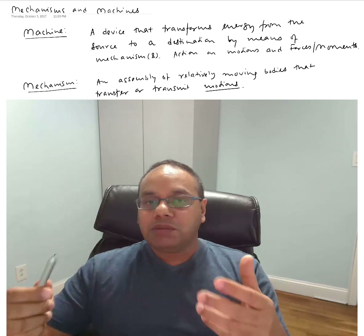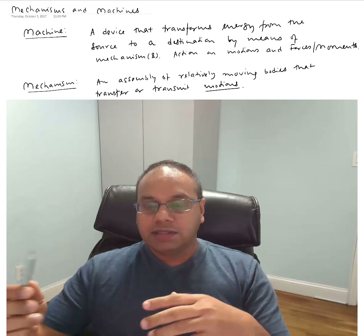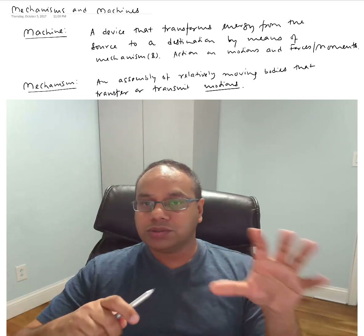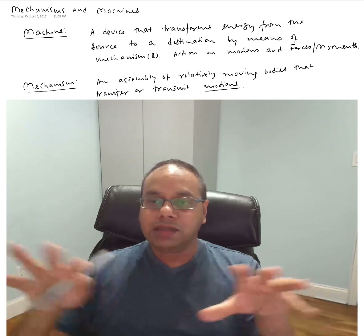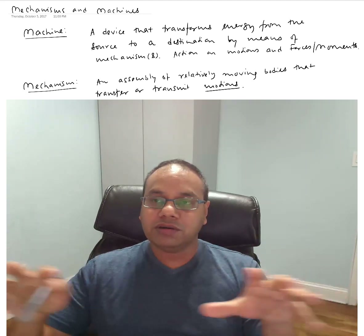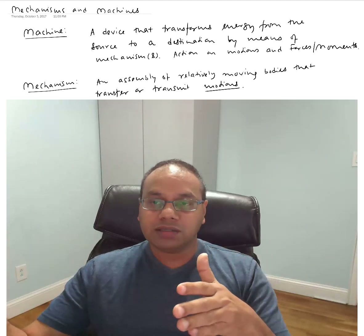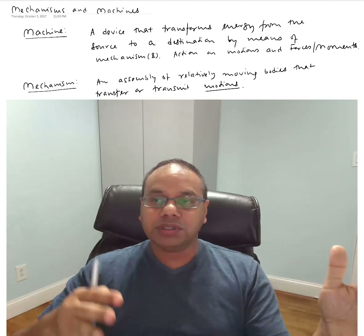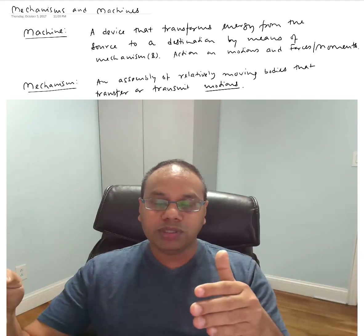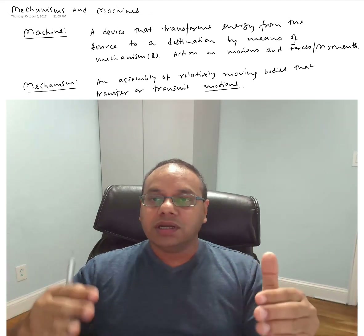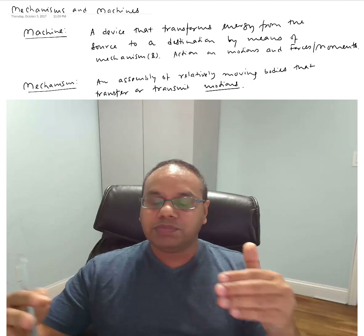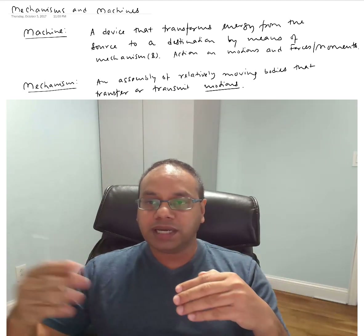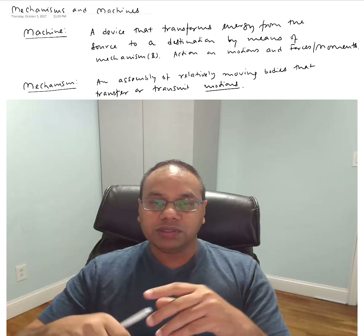We define a machine as a device or a system that transforms energy from a source to a destination, and it does so by means of either one or a set of mechanisms. In essence, there is an action on the motion, forces, and movements, which makes sense because energy is usually obtained by doing some work, and work involves displacement as well as forces and movements.